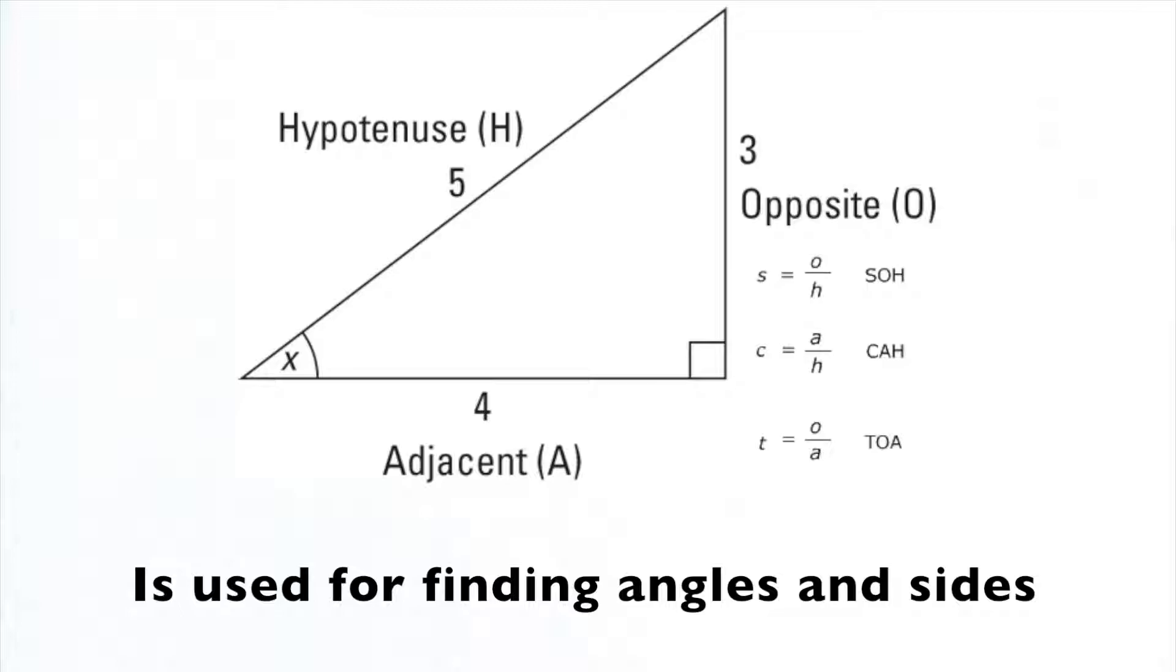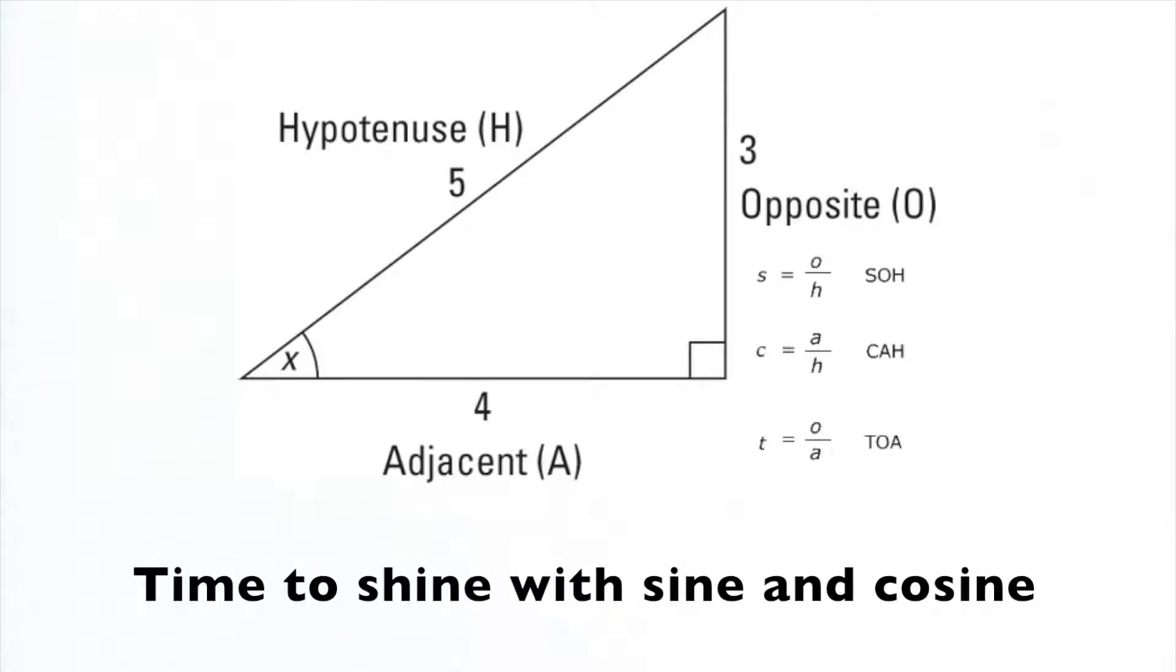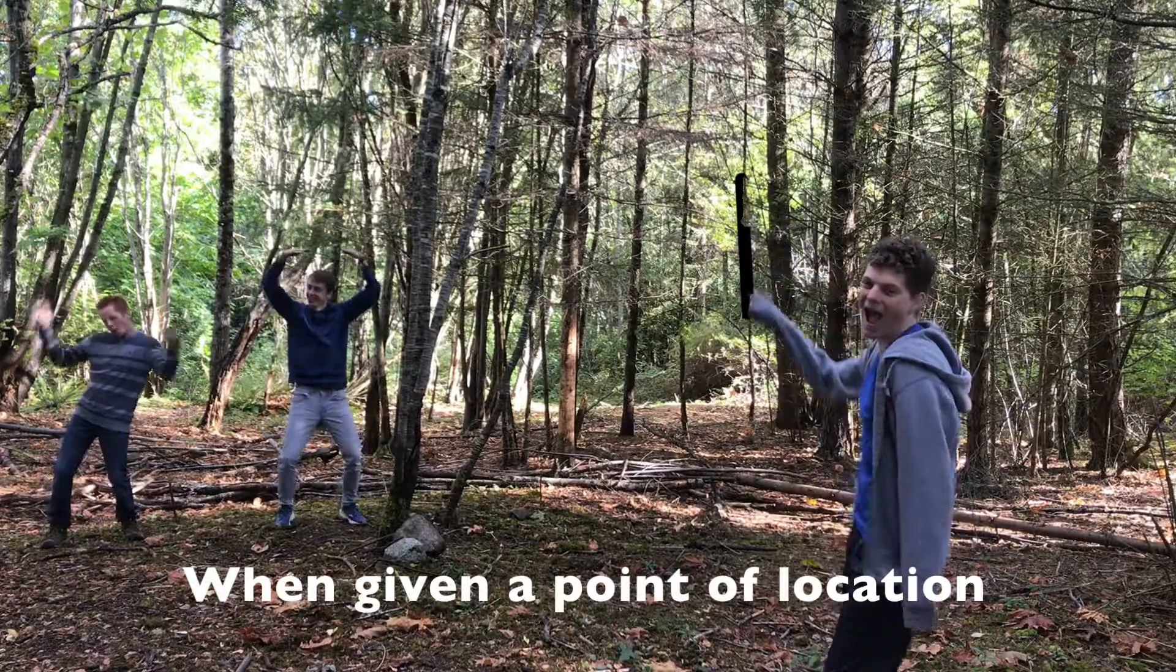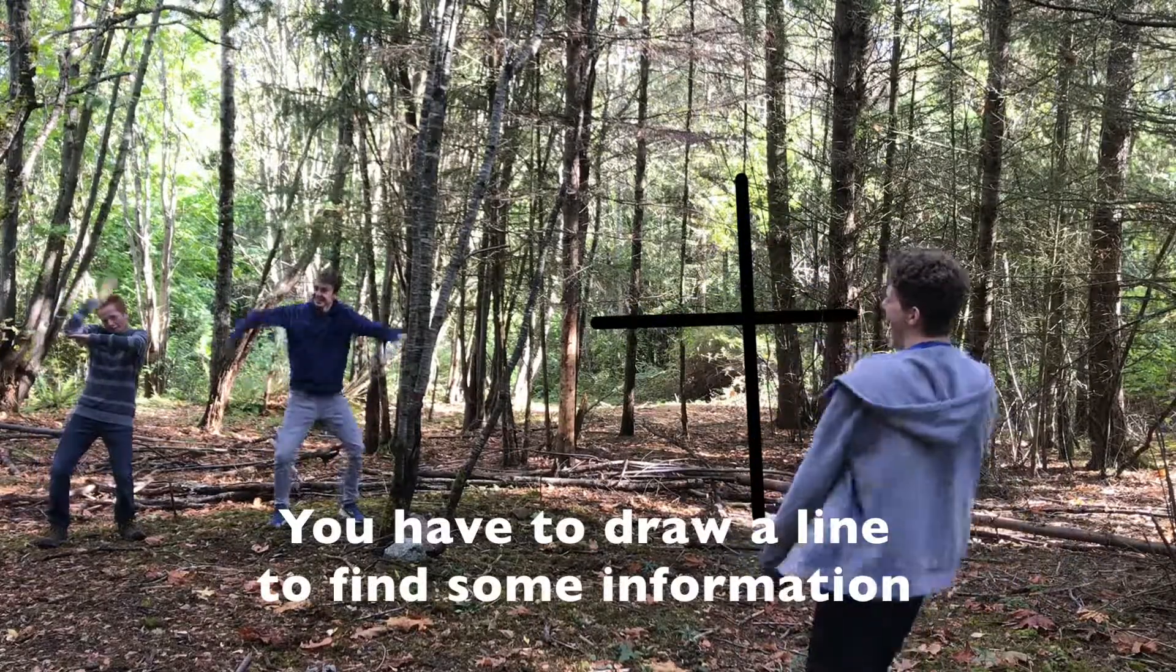SOHCAHTOA is used for finding angles and sides. Time to shine with sine and cosine. If you're having problems with tan, just call Superman. When given a point of location you have to draw a line to find some information.